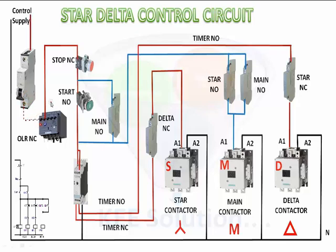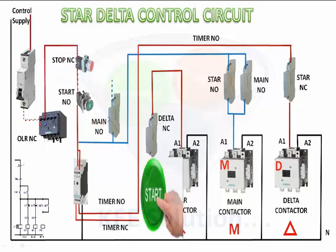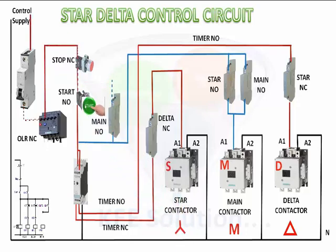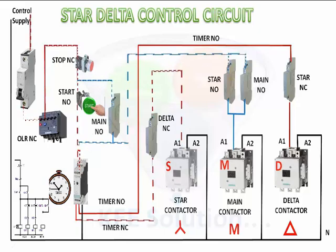Power comes through the MCB, overload relay, and stop NC, and it gets stuck at the start NO or main contactor NO contact. Power will not pass because these contacts are NO. When we press the start button, the timer will start and the control circuit will activate.